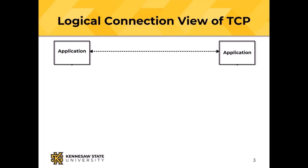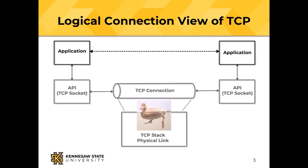Logically, the connection looks like this: two applications talk to each other, and as far as the application is concerned, that's the conversation — one application talking to another. What really happens is each application talks to an API, in this case something called a TCP socket. A socket is software; it isn't really a plug that you plug something into. The two TCP sockets provide a connection between the two applications, and the connection looks to the application like a pipe — bits go in one end and come out the other. The physical link I chose to represent by a duck: on top of the water the duck floats along nice and easy, but there's a lot of paddling going on underneath, and there's a lot of paddling going on underneath with TCP/IP as well.